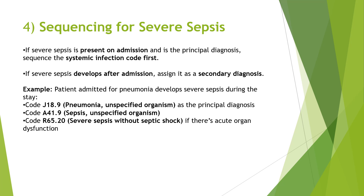Next, sequencing of severe sepsis: there are two scenarios. If severe sepsis is present on admission and the patient's chief encounter is sepsis, code sepsis as primary. If severe sepsis develops after admission, assign it as a secondary diagnosis. Example: patient admitted for pneumonia develops severe sepsis during the stay — primary diagnosis is pneumonia, then code A41.9 for sepsis, followed by R65.20 (severe sepsis without septic shock).